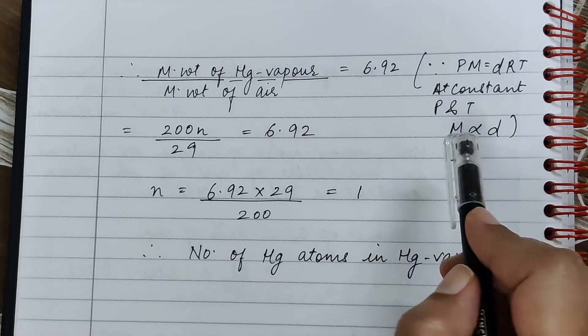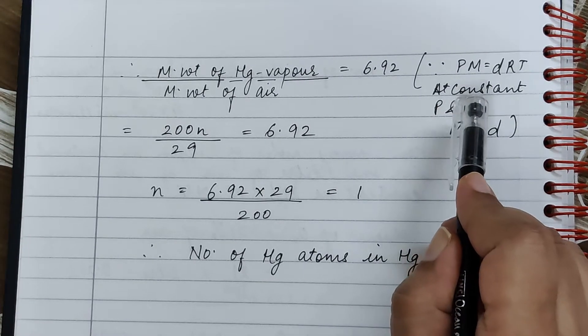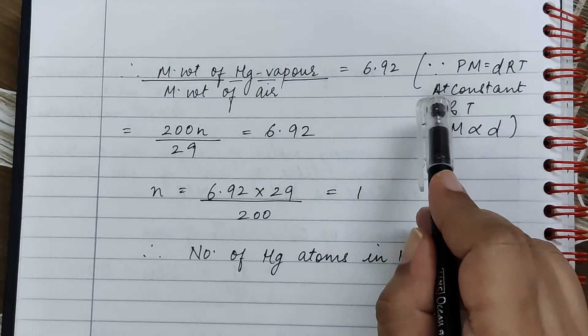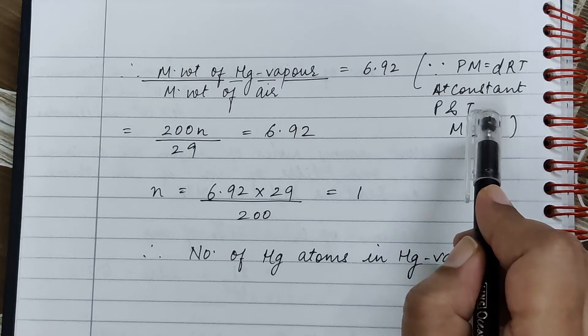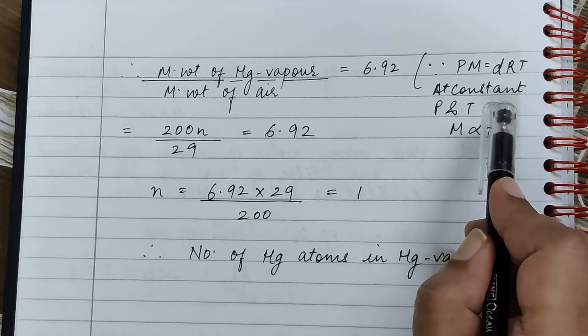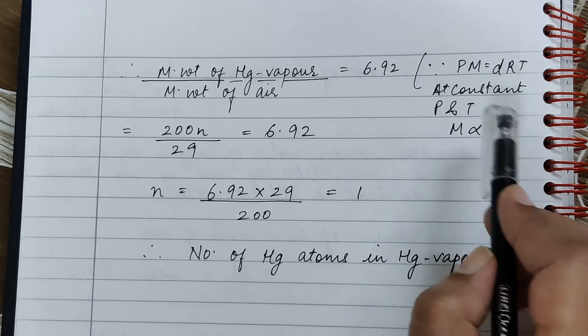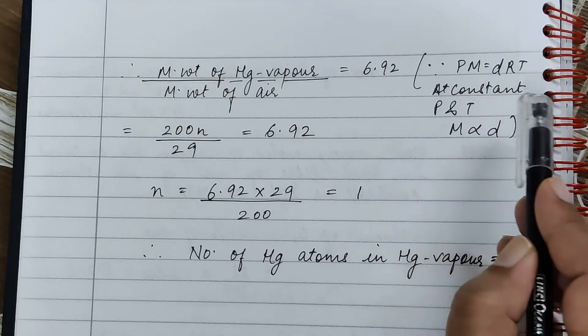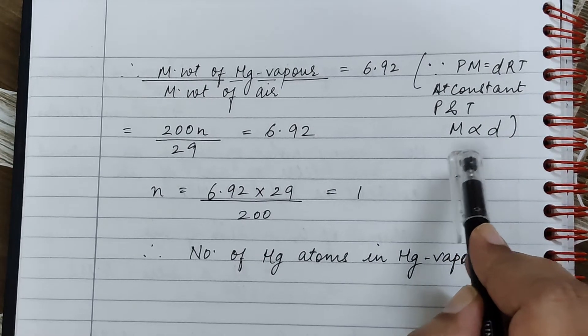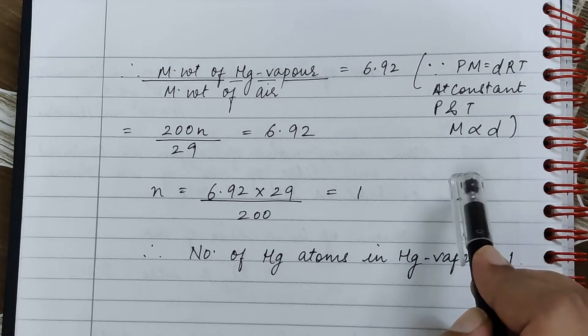Now we know that PM is equal to DRT, where P is the pressure, M is the molecular weight, D is the density, R is the gas constant, and T is the temperature. So at constant pressure and temperature, molecular weight is directly proportional to density.